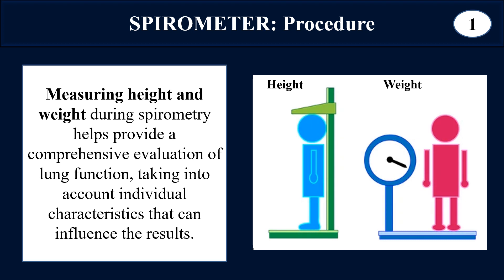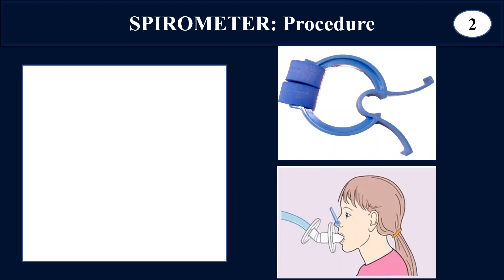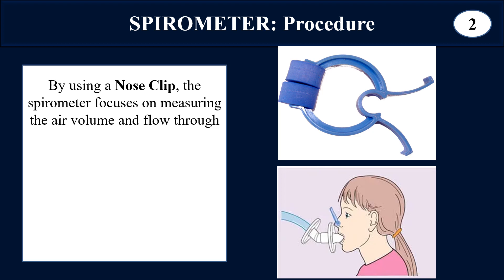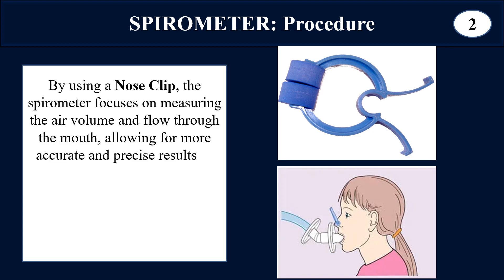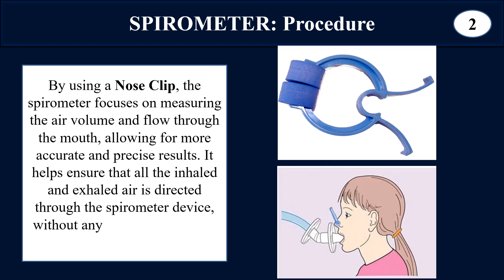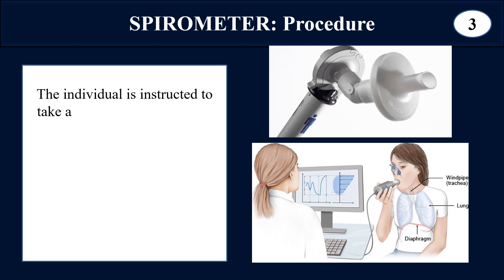In the second step, the patient is allowed to sit comfortably with feet flat on the floor. Then the nose clip is applied to ensure that all air measured through the spirometer device comes from the lungs through the mouth and does not escape through the nose. That is why the nose clip is applied.